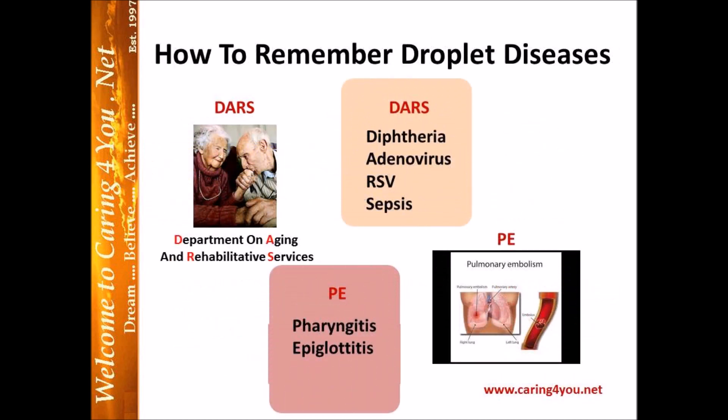Let's look at some more pictures for the droplet diseases. There's more than four — in this particular case there are 14, but we're going to remember all 14 using pictures. Look at the picture of the elderly couple in the corner. I want you to remember DARS — Department on Aging and Rehabilitative Services. When you think of DARS for droplet precautions, think diphtheria, adenovirus, RSV, and sepsis.